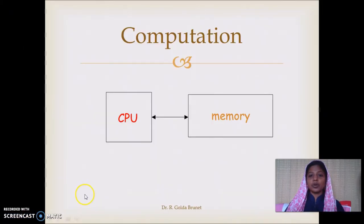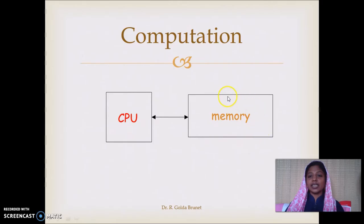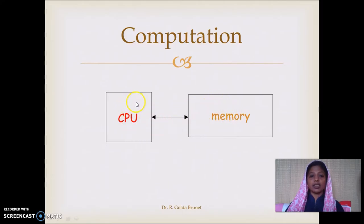Any modern computer can be represented by two blocks: one is the computational power, which is the central processing unit, and the other is the memory. All our modern computers are based on the von Neumann stored program concept. That means your data and instructions will be stored in memory. The CPU will read the instruction and data, process them, and store the result back to memory. This is the simplified model of our modern computer.